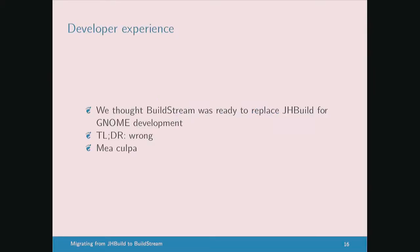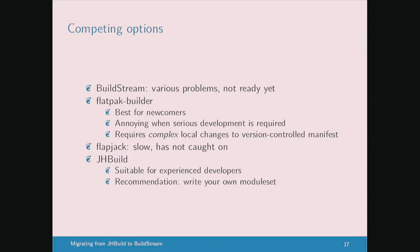We said BuildStream was ready to replace JHBuild for GNOME development, but I'll take some of the blame — I agreed to this before I had gotten used to using BuildStream for daily development, which was not a responsible approach to take. There are various problems currently, some more serious than others. Suffice to say it needs more work before we can recommend it to GNOME developers. So what should we be using instead if JHBuild is deprecated? Tristan and CodeSync have been admirably trying to get it there and making good progress, but it's not ready yet.